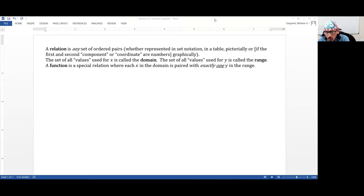Notice that a relation can be expressed in a number of ways. We may or may not have numbers for our first and second component or coordinates. When we do, we refer to those in the ordered pairs x comma y. The domain is the set of all x's being used by the relation. The range is the set of all y's being used in the relation. And a function is a special relation where each x in the domain is paired with exactly one y in the range.